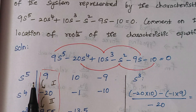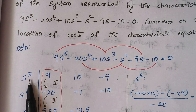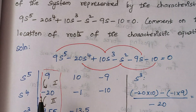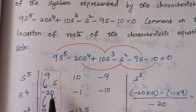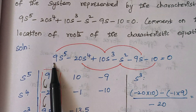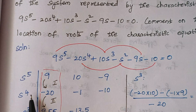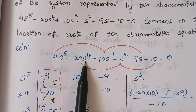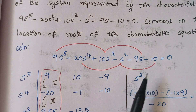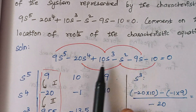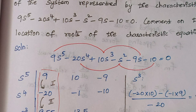Now we form our Routh array starting from S^5 down to S^0. For the S^5 row, write the coefficients of the odd-powered terms: coefficient of S^5 is 9, S^3 is 10, and S^1 is −9. For the S^4 row, the coefficients of even-powered terms: S^4 is −20, S^2 is −1, and S^0 is −10. These two rows come directly from the characteristic equation.